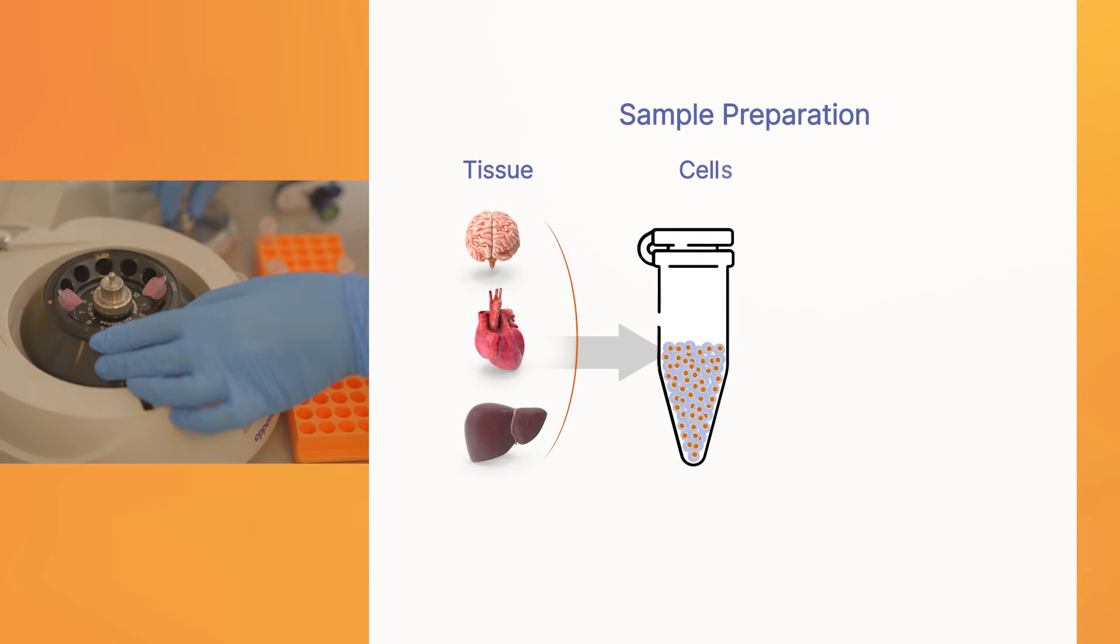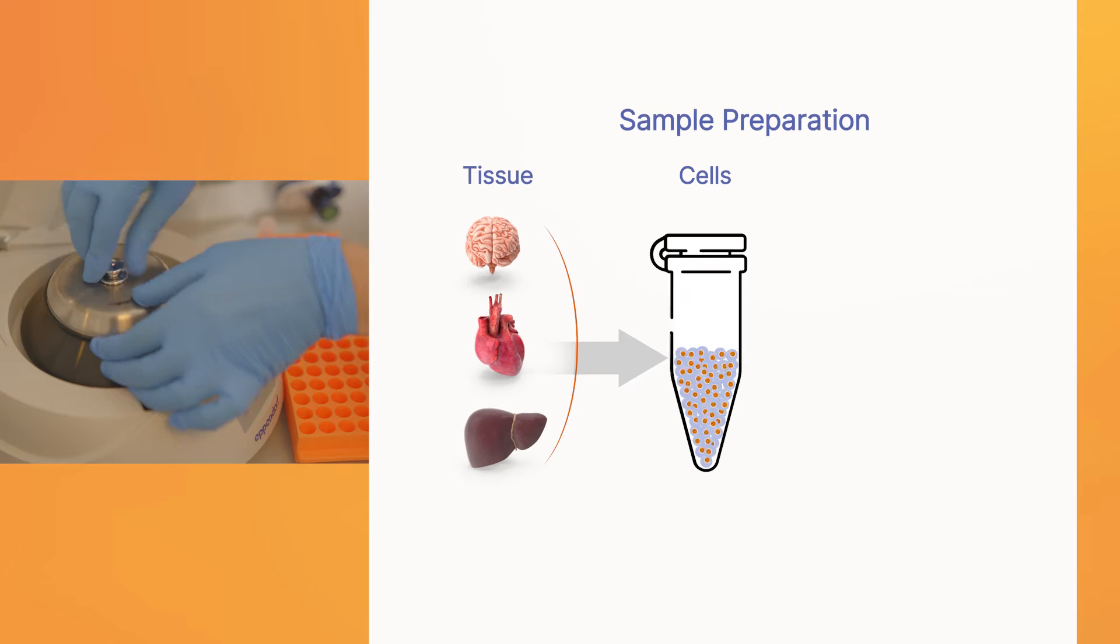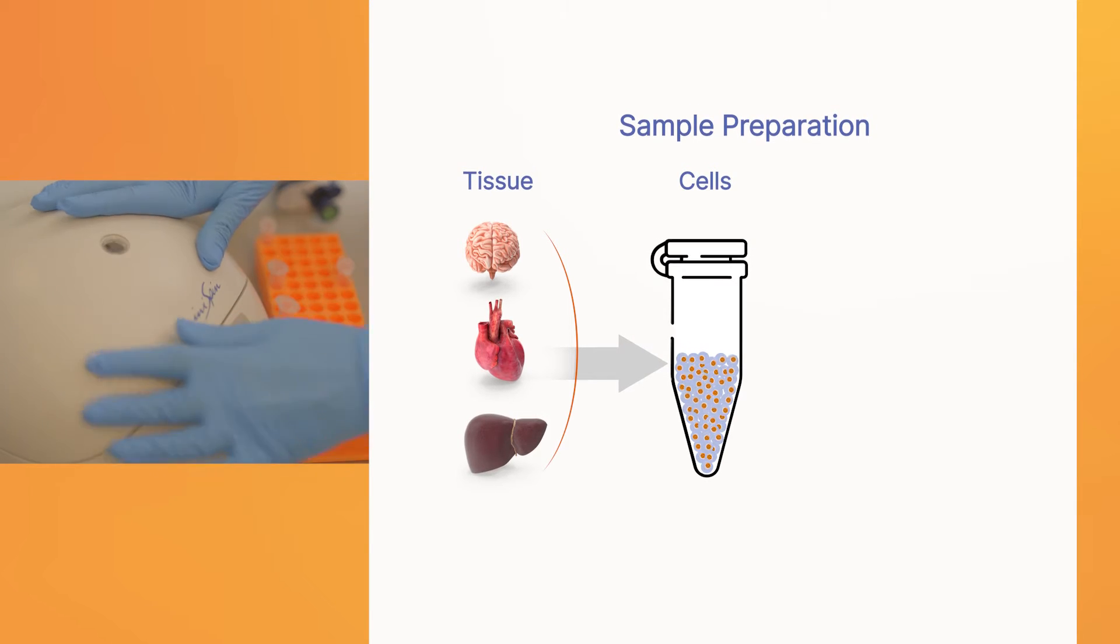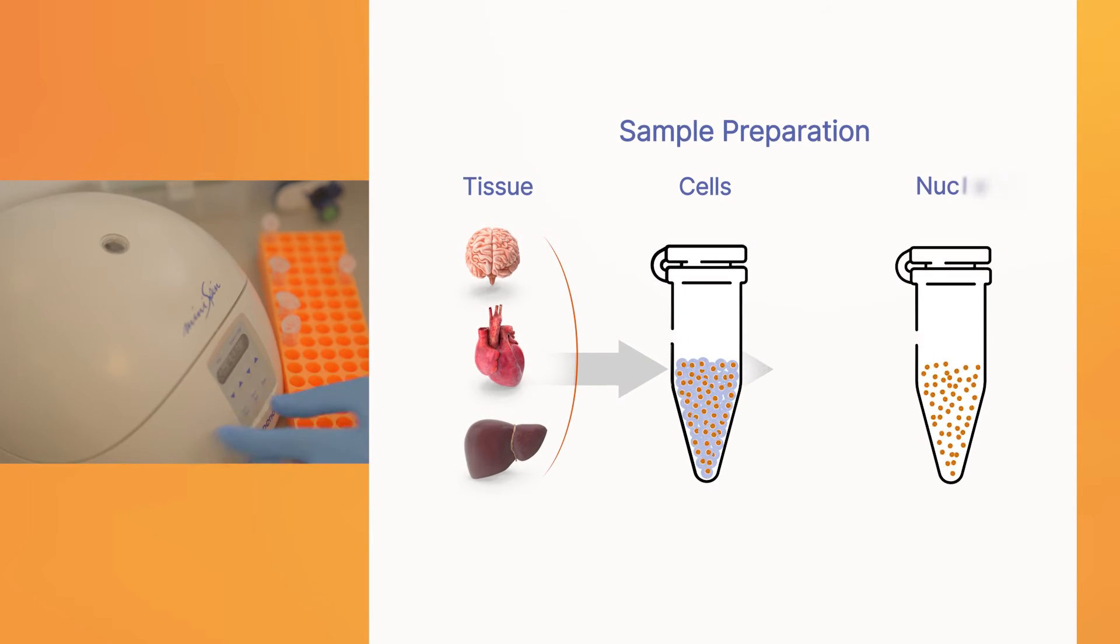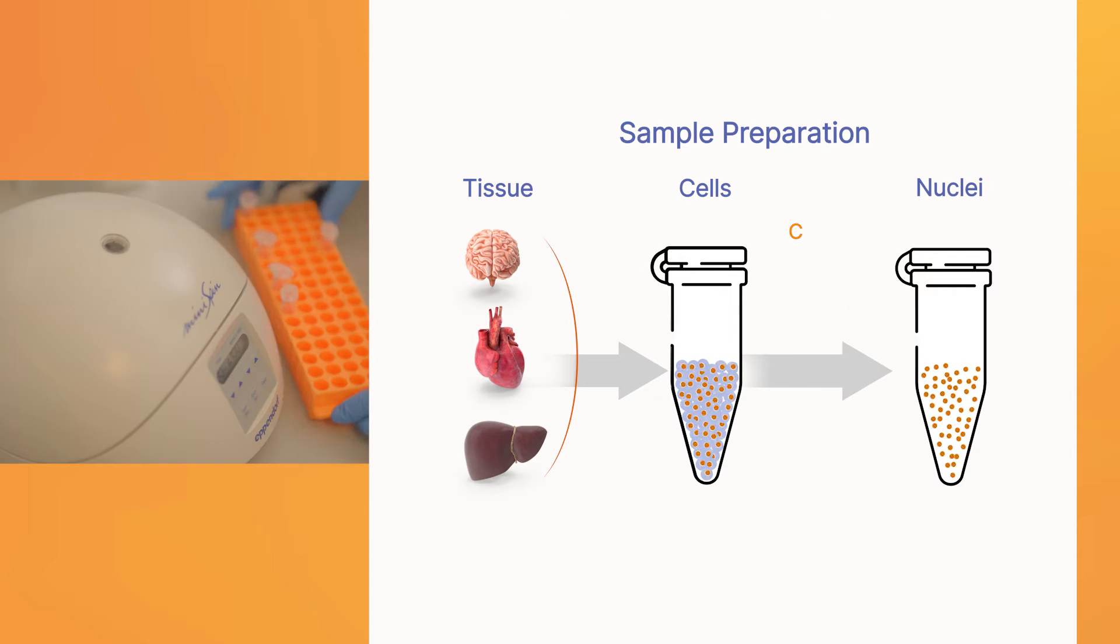Start by breaking up the tissue and lysing the cells gently enough to have the nuclei remain intact. Then separate the nuclei from cellular debris via methods like column filtration or flow sorting.